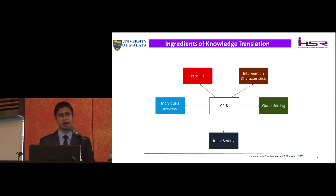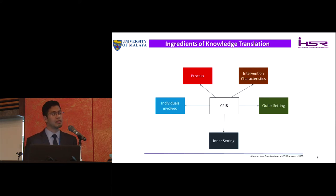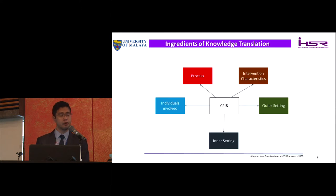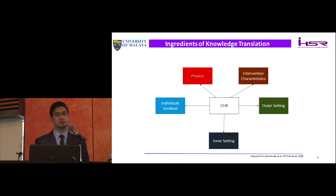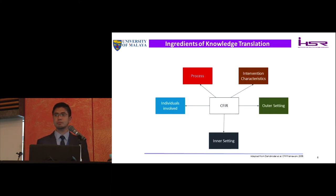Third is the outer setting — you need to consider the context of where your project is being done, whether it is suitable and conducive. Fourth is the inner setting, focusing on your research team and organization in terms of structure, the roles team members play, and the resources put towards improving communication to facilitate KT. Fifth and last is the individuals involved, in terms of their expertise and the motivation your team has for pushing forward towards KT.